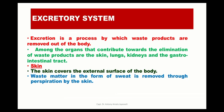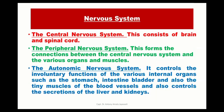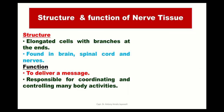The excretory system is a process by which waste products are removed out of the body. The excretory organs are the skin, lungs, kidney, and gastrointestinal tract. The skin covers the external surface of the body and removes waste in the form of sweat. The urinary system is formed of the kidney, ureter, urinary bladder, and urethra, and it excretes urine. The nervous system comprises the central nervous system, peripheral nervous system, and autonomic nervous system. The central nervous system is formed of the brain and spinal cord. The neuron is the functional unit of the nervous system.